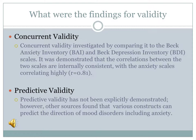Concurrent validity of the DASS has been investigated by comparing it to the Beck Anxiety Inventory (BAI) and Beck Depression Inventory (BDI) scales, which are the gold standard. It was demonstrated that correlations between the two scales are internally consistent, with the anxiety scales correlating highly. Predictive validity has not been explicitly demonstrated; however, some sources found that various constructs can predict the direction of mood disorders, including anxiety, providing evidence for the validity of the DASS.